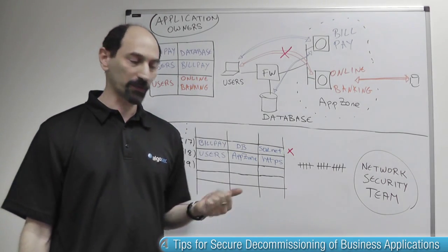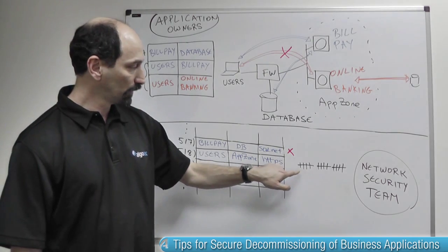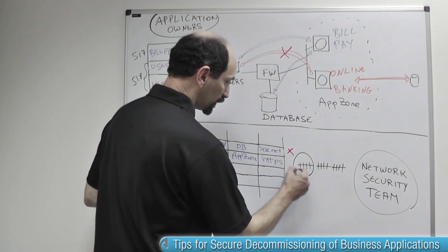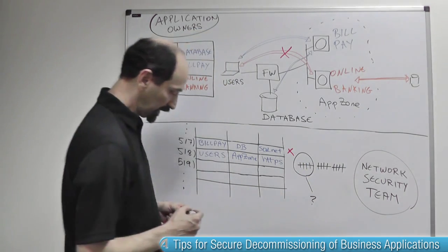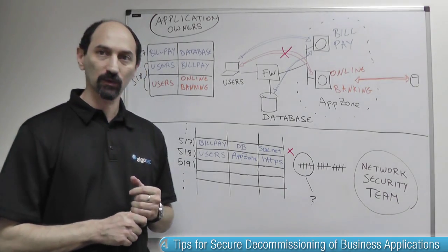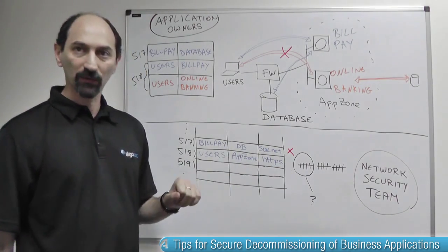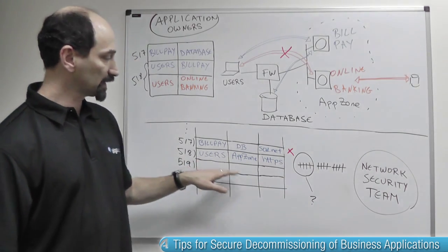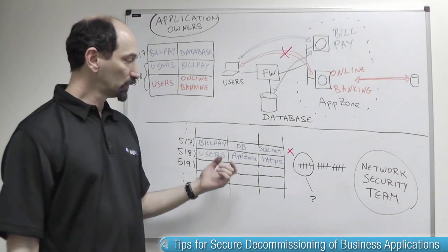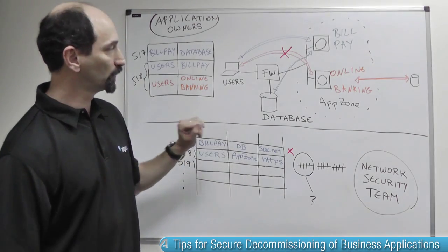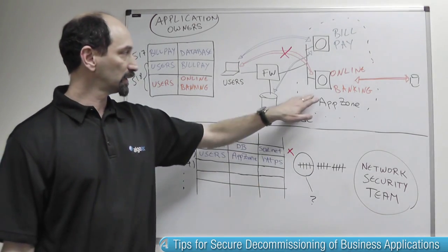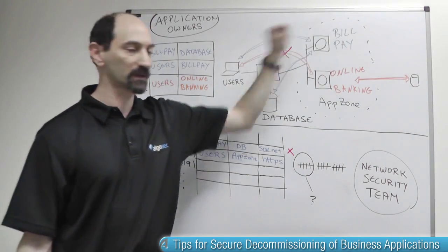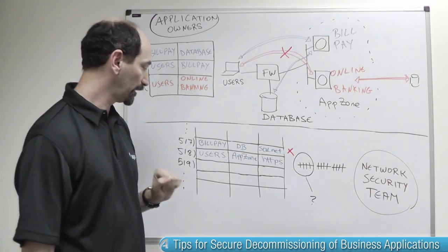They could also go one step further and look into the detailed usage patterns of rule 518. Systems exist that let you do this. Looking carefully into the traffic patterns, they would realize that rule 518 is now too wide and can be tightened to something more secure — only allowing traffic to servers still in production, like the online banking system, with no need to allow traffic toward the decommissioned bill pay system.